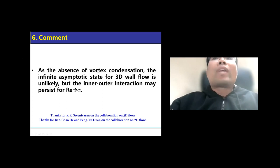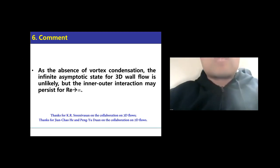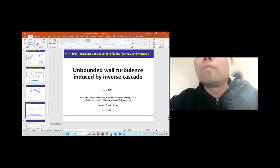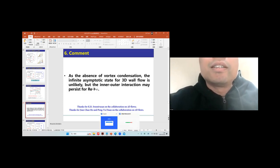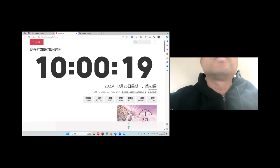So, in summary, we obtain a one-third scaling for the fluctuation intensity in 2D channel flows, and this scaling suggests the unbounded 2D fluctuations compared to the bounded fluctuation in 3D channel flows. And we also want to make a comment that the difference between 2D and 3D flows is due to the presence or absence of the vortex condensation. For 3D flows, as there is no vortex condensation, we think that the infinite asymptotic state for 3D wall flows, as suggested by the logarithmic variation, is unlikely. However, we should also note that the inner-outer interaction in 3D wall flows may still cease for Reynolds number goes to infinity. In other words, whether the moderate inner-outer interaction in 3D flows breaks the law of the wall or restores the law of the wall, we still wait for more data to verify in future.